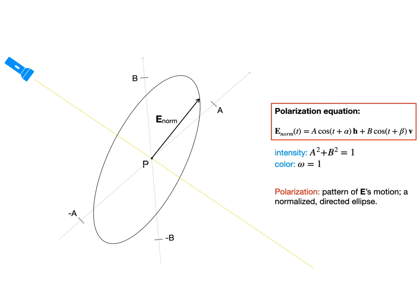Unlike color and intensity, the polarization at p is something that our eyes cannot see. It is the pattern of E's motion, the shape and orientation of the ellipse, as well as the direction of E's rotation, which can be either clockwise or counterclockwise. The size of the ellipse and the speed of E's rotation do not matter.